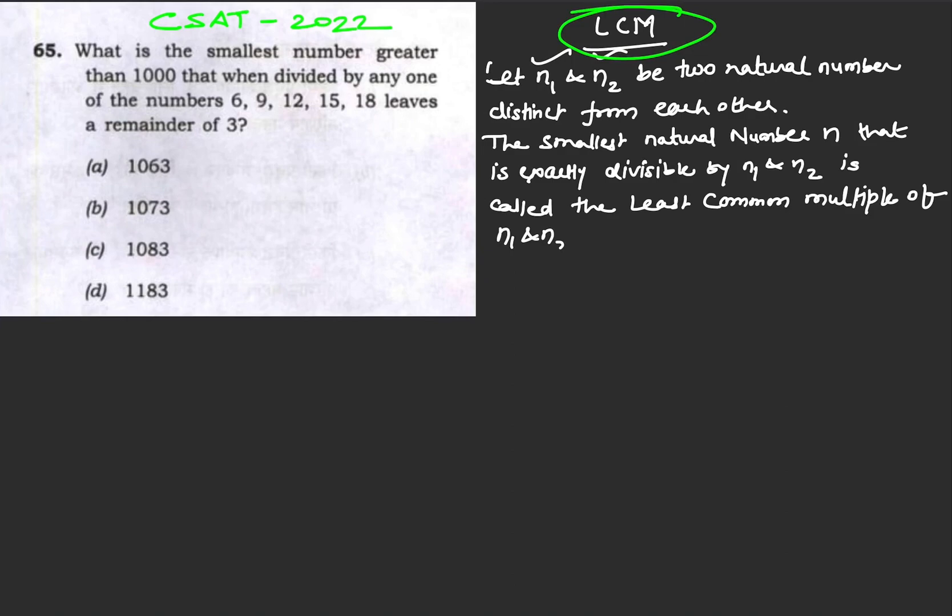from each other. The smallest natural number that is exactly divisible by n₁ and n₂ is called the least common multiple. This is the concept of LCM, and therefore we have to find the LCM of these numbers.